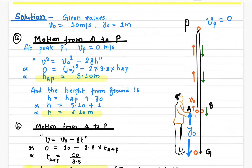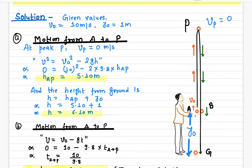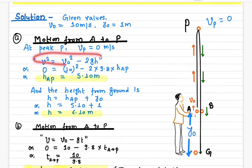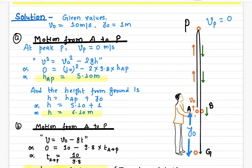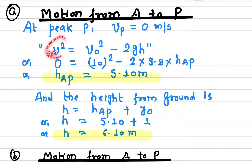The acceleration due to gravity g is constant at 9.8 meters per second squared. Point A is the starting position and P is the peak. We consider the motion from point A to P. To find the height from A to P, we use the equation v² = v₀² − 2gh. We know the velocity at the peak is zero, and the initial velocity is known, so we can solve for h.